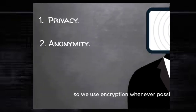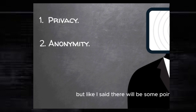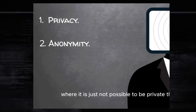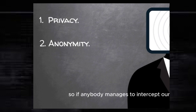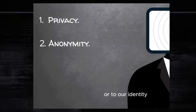We use encryption whenever possible in order to improve our privacy, but there will be some points and situations where it is just not possible to be private. Therefore, the best solution is to try to become as anonymous as possible, so that if anybody manages to intercept our data, they won't be able to link it to ourselves or to our identity.